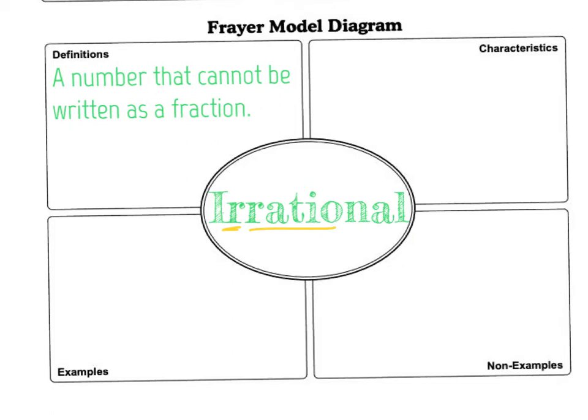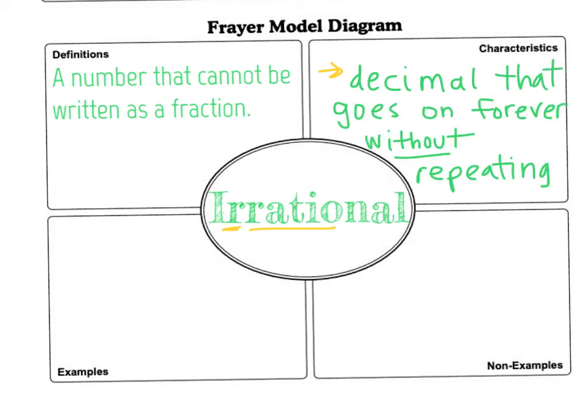So the characteristics of an irrational number, it's when we have a decimal that goes on forever without repeating. So a decimal that goes on forever without repeating. The decimal does not terminate, and it does not repeat.